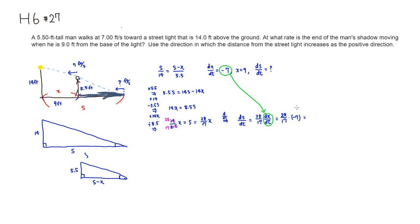7 times 8 is 56, 2 times 7 is 14, so it's going to be negative 196 over 17. This is feet per second.